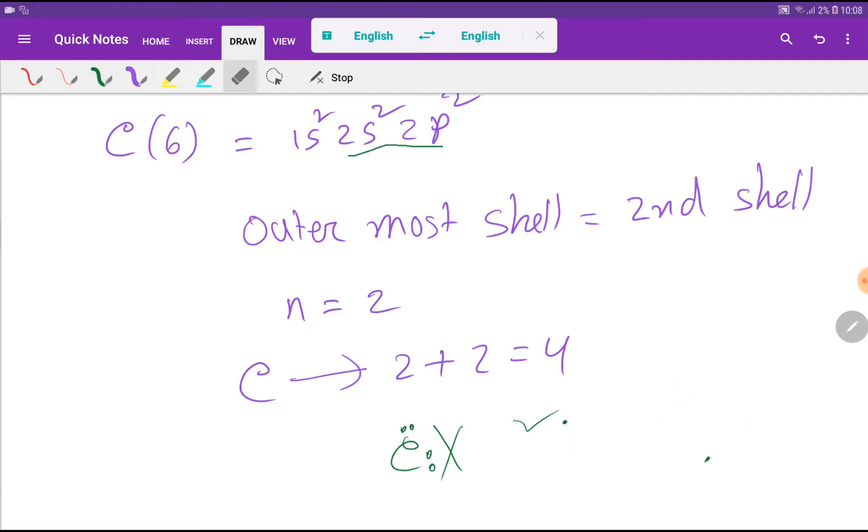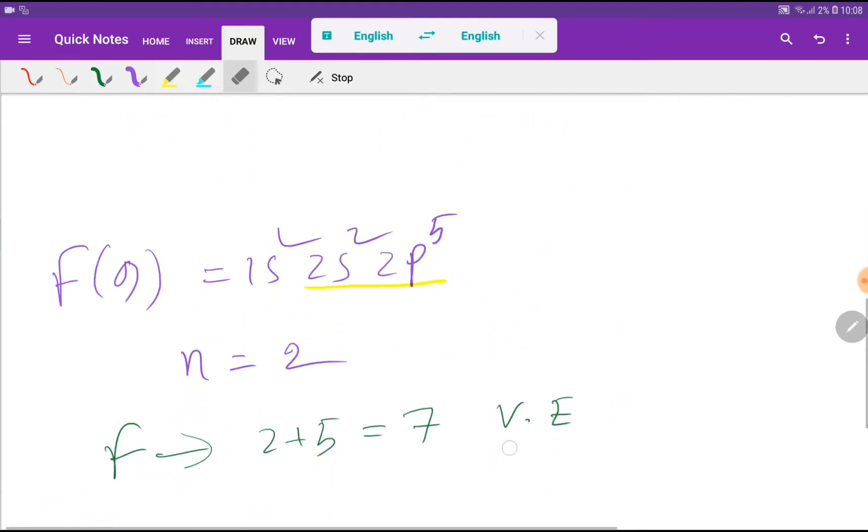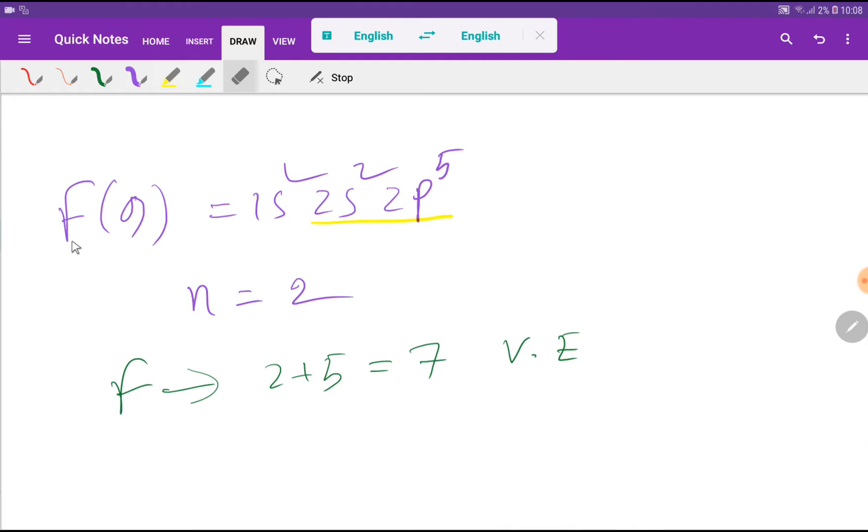Let me take another example so that you can understand these things clearly. Look at here, for fluorine. We know that the atomic number of fluorine is nine. So if you do the electronic configuration, you will get this. Here, the highest value of principal quantum number is two. So this is the valency shell. In valency shell we have two plus five, that's seven valency electrons.